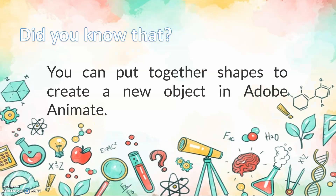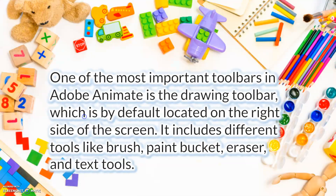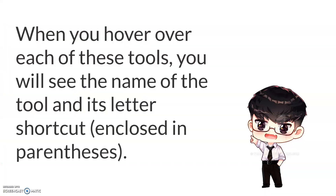Did you know that you can put together shapes to create new objects in Adobe Animate? One of the most important toolbars in Adobe Animate is the Drawing Toolbar, which is by default located on the right side of the screen. It includes different tools like brush, paint bucket, eraser, and text tools. When you hover over these tools, you will see the name of the tool and its letter shortcut in parentheses.